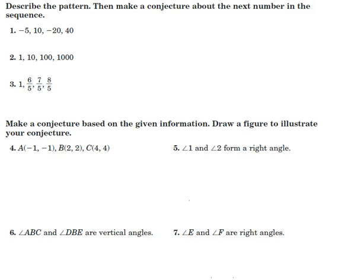Hello everybody, and welcome to assignment D. This is the front page, 57, and here we're talking about patterns and conjectures. For numbers 1, 2, and 3, describe the pattern and make a conjecture about the next number in the sequence.